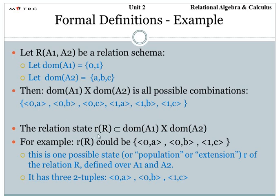The relation state r says that it is a subset of the Cartesian product of the domains of attributes. So the Cartesian product of domain of A1 and domain of A2 is a subset of the relation state. For example, the relation state could be {(0A), (0B), (1C)} — taking any random ordered pairs from the Cartesian product. This is one possible state of relation R defined over A1 and A2, having three tuples: 0A, 0B, and 1C.